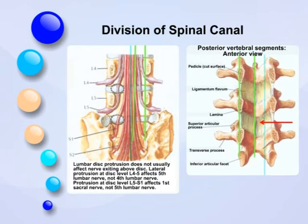The bony spinal canal is divided into two parts. The medial part is occupied by the dura, and the lateral part is occupied by the nerve root emerging from the dura and exiting through the foramen.